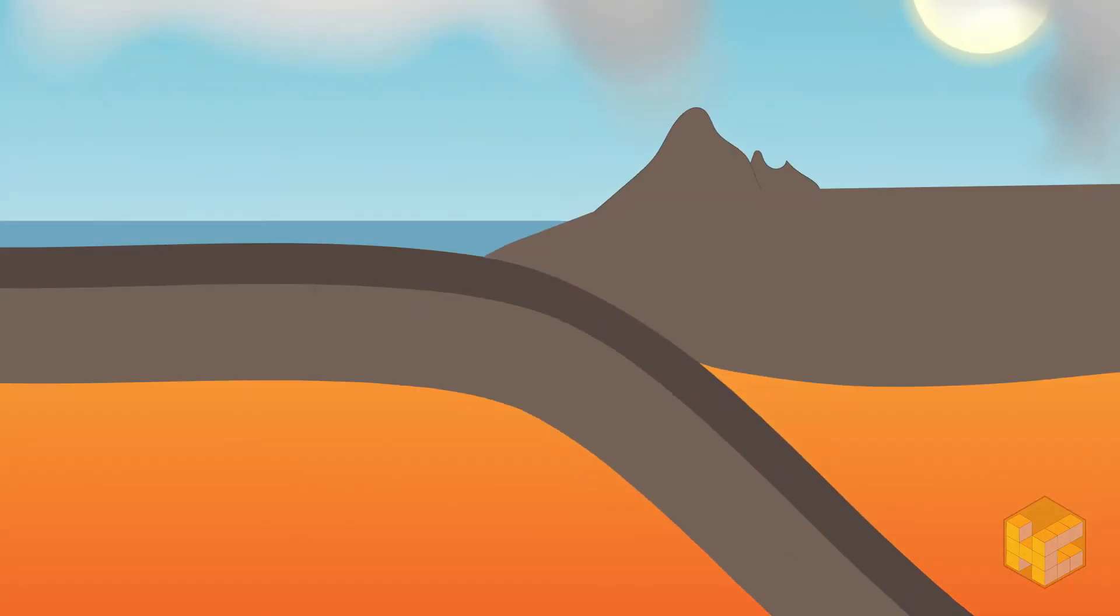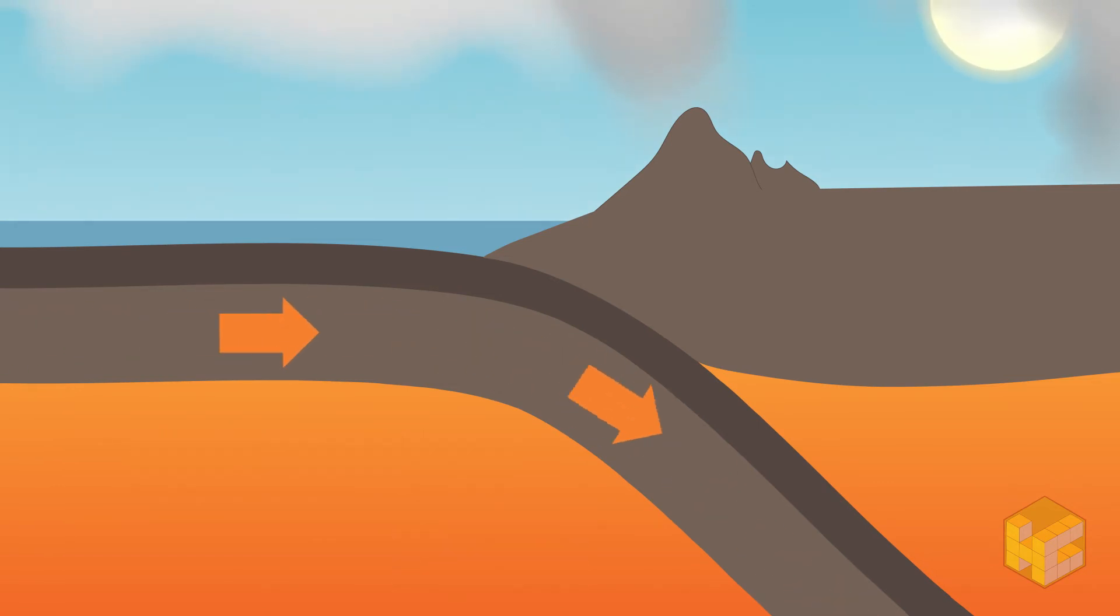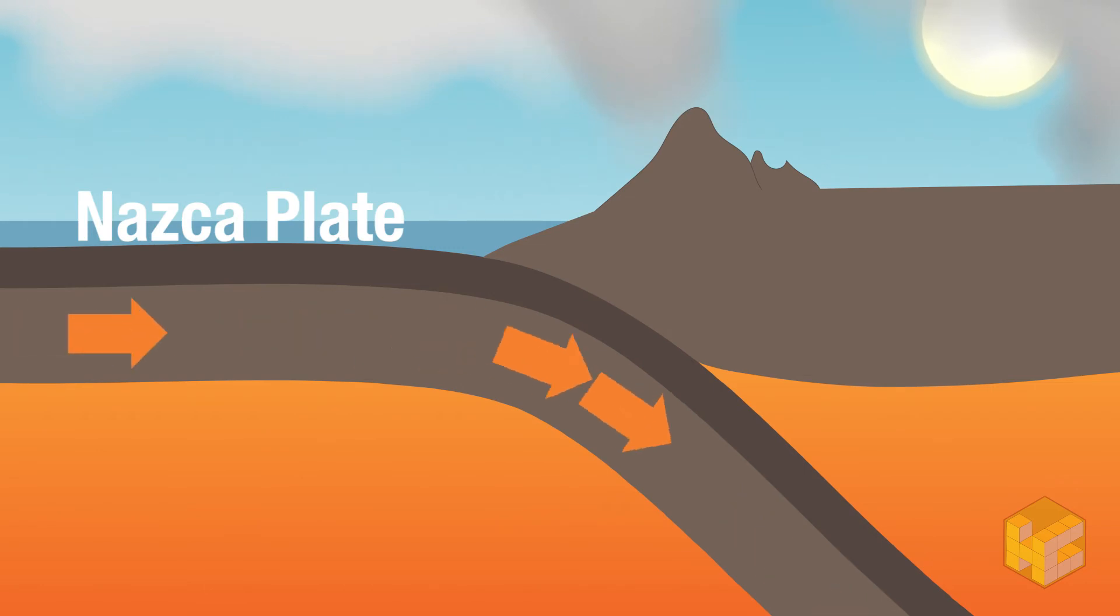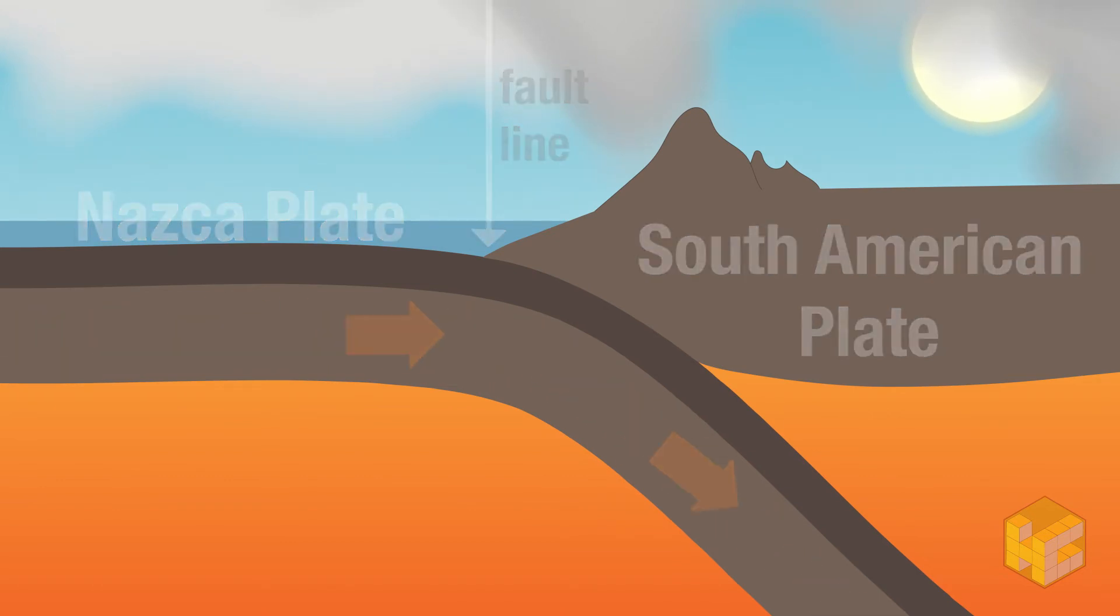The largest earthquakes, like this one, occur on subduction zones, where one tectonic plate slides underneath another one. Scientists call it a megathrust earthquake. On the coast of Chile, the Nazca plate slides underneath the South American plate along a 1,000-kilometer or 620-mile fault line.